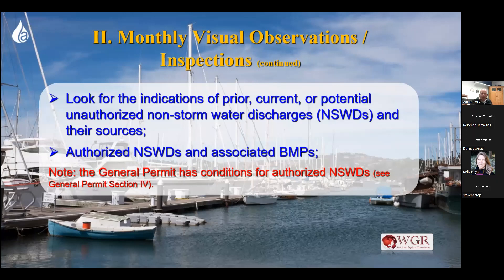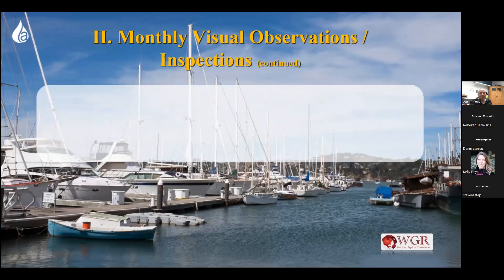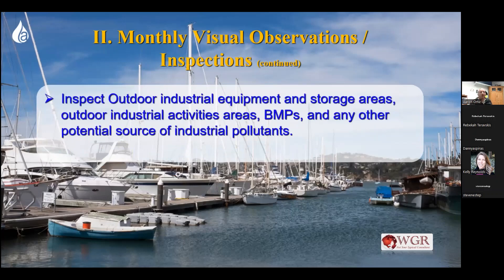I've walked up to places where I saw staining and brought it to someone's attention, and they went and stopped whatever unauthorized discharge it was. So you need to look for: is there any non-stormwater leaving? Are there indications of what had left? And if something did leave, was it authorized? If it wasn't authorized, you need to stop it. For all the details on conditions for authorized non-stormwater, you can go to permit Section 4, which goes into detail on what's allowed.